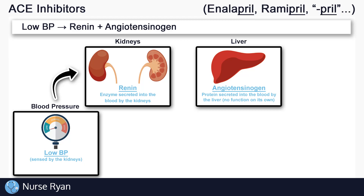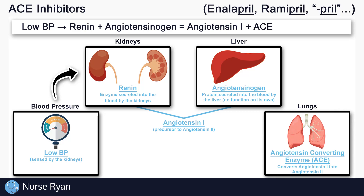Angiotensinogen doesn't do much on its own — it's basically just floating around in the blood waiting to be turned into something else. Once renin finds angiotensinogen, it breaks it down into a substance called angiotensin 1. We're about halfway through this process. Angiotensin 1 also doesn't do anything on its own, so it floats around waiting to be turned into something else, using a different enzyme called angiotensin converting enzyme, or ACE for short.